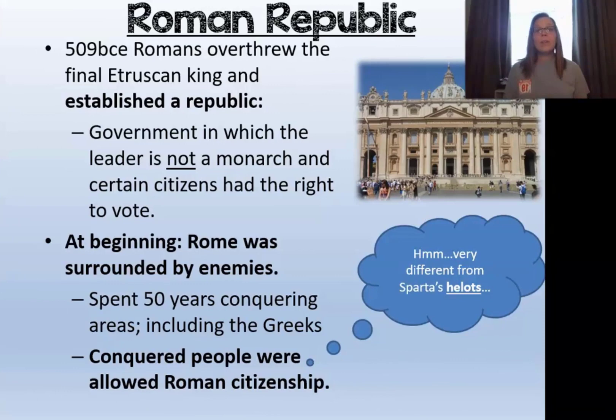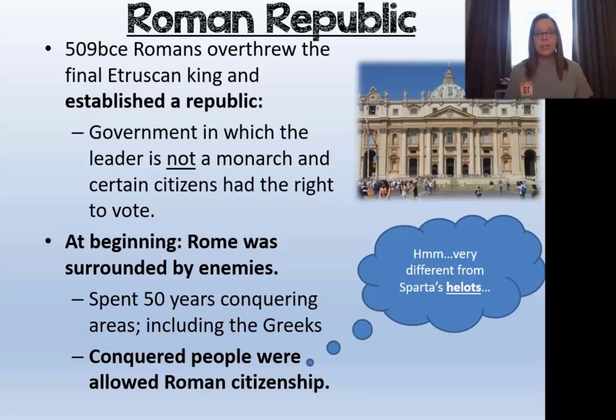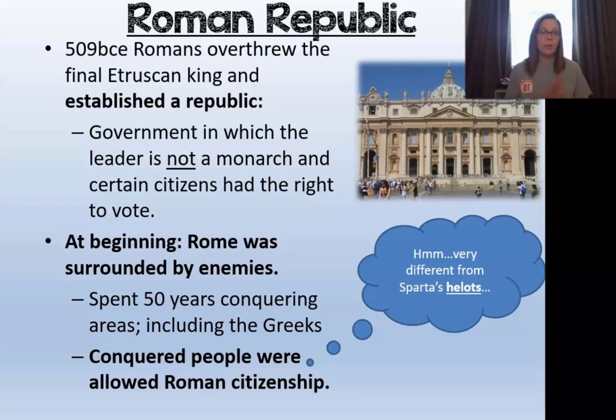One thing you'll notice about the Roman civilization is that throughout its history it goes through several different types of government, so we're going to learn a lot about different governments just from looking at Rome. In 509 BCE, the Romans overthrew the last Etruscan king and established something called a republic. A republic is a type of government in which you have representatives that represent the people and a leader, but the leader is not a king and doesn't have all the power. Certain citizens are allowed to vote — it's very similar to what we have in the United States today.